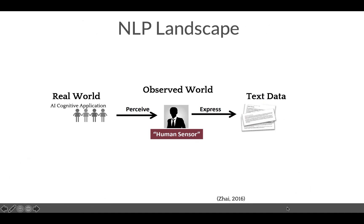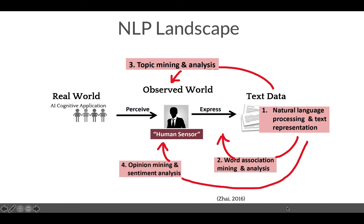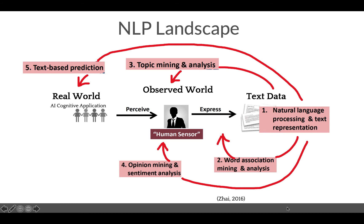How can we convert the text mining landscape into an NLP task framework? Starting from obtaining textual data, we apply natural language processing, which allows us to examine word associations and identify language features. We can do topic mining analysis to get an idea about the observed world as human sensors see it. We can do opinion mining and sentiment analysis to understand what the customer thinks about the product. And we can do text-based prediction, which leads us to recommendation system predictions.